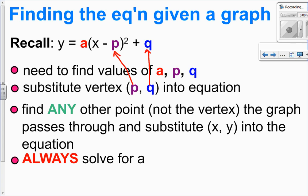Now, you always solve for A. This is really important. You're going to do this in the 20 level and the 30 level. Always solve for A. And the way we solve for A is find any other point, not the vertex, and substitute it in the equation that we have so far with P and Q. You substitute in X and Y and solve for A. We always solve for A. So let's try a question.